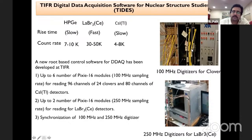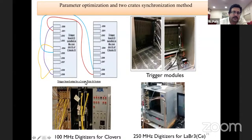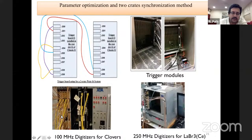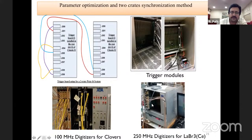The solution was to develop a scheme coupling different digitizers: lanthanum bromide requires 250 MHz sampling while germanium and CsI work with 100 MHz digitizers. A software was developed to control different sampling in two crates, with synchronization via a trigger board that sends a common clock from the master crate to the secondary crate. The 96 channels of the clovers and 14 lanthanum bromide detectors digitized at 250 MHz have been data-synchronized simultaneously using this common clock.